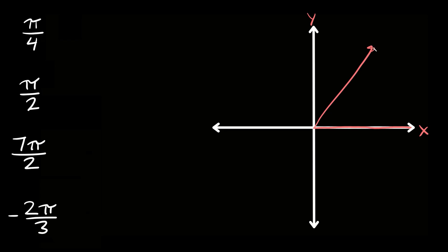So wherever the terminal side ends, that's what quadrant we lie in. And remember we have four quadrants: this is quadrant 1, this is quadrant 2, 3, and 4.